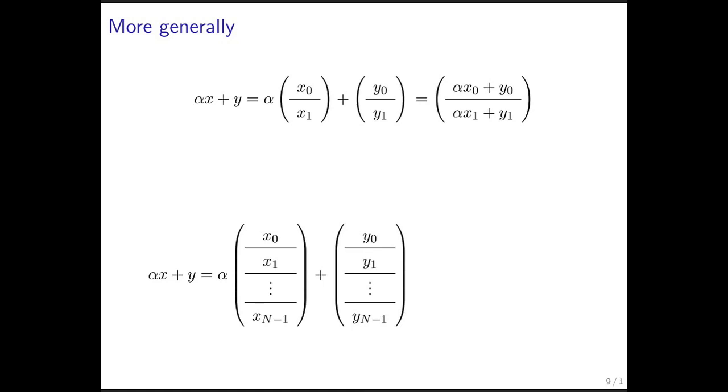So more generally, if you want to do alpha times x plus y, then you can take your vectors x and y and partition them into a top part and a bottom part. And as long as vectors x0 and y0 are of the same size as vectors x1 and y1, then the result is just alpha times x0 plus y0 for the first part of the result vector and alpha times x1 plus y1 for the second part of the result vector.